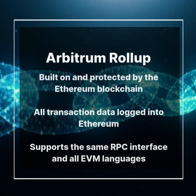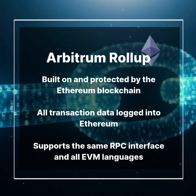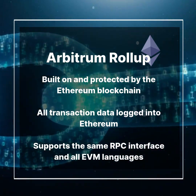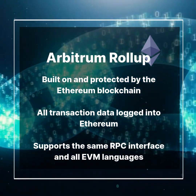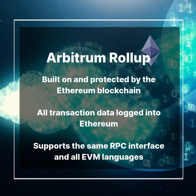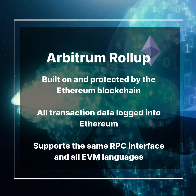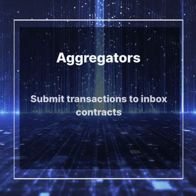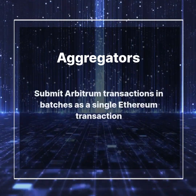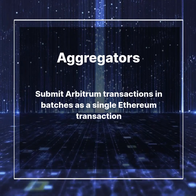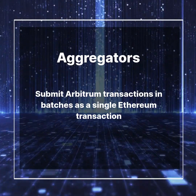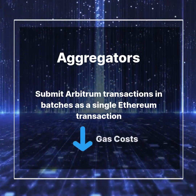Rollup technology is key to scale the Ethereum application. Like all rollups, the Arbitrum rollup chain is built on and protected by the Ethereum blockchain, with all transaction data logged into Ethereum. Arbitrum supports the same RPC interface as Ethereum and all EVM languages. Other than directly submitting transactions to in-box contracts, developers can choose aggregators, which submit Arbitrum transactions in batches as a single Ethereum transaction. Therefore, its cost will be spread over all transactions and significantly reduces gas costs.